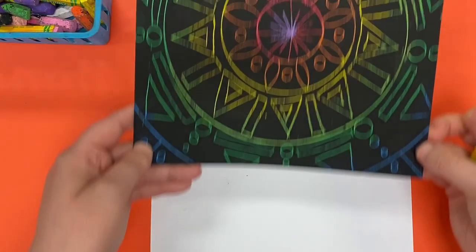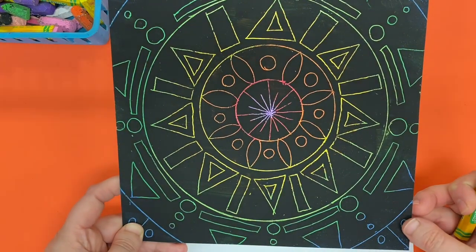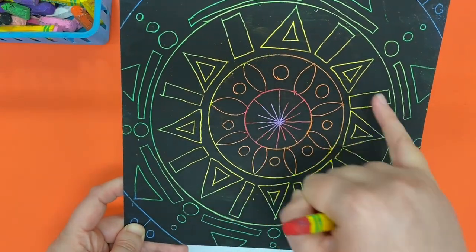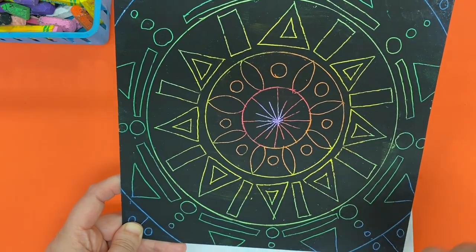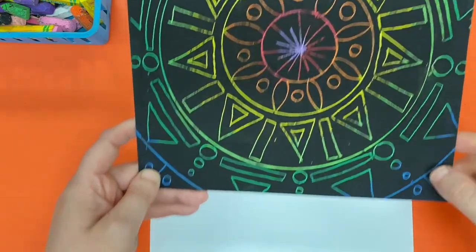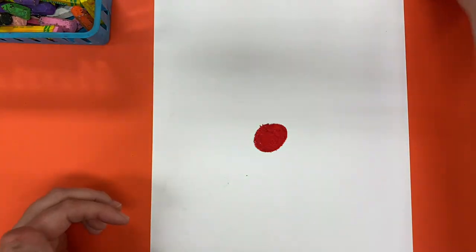If you do not press down hard or you do not color it in all the way, when you go to scratch off that top layer of paint the colors that come through are not going to be very bright. It won't be as interesting or as special as it could be.